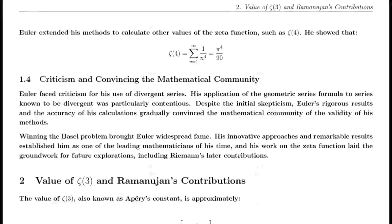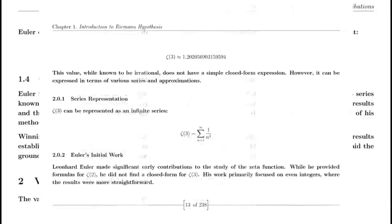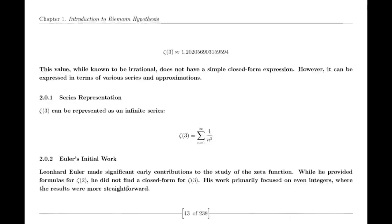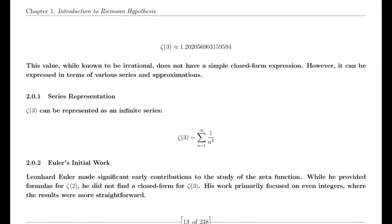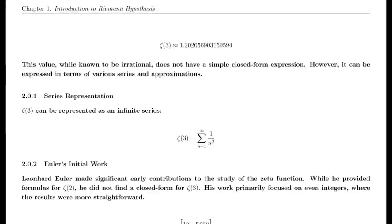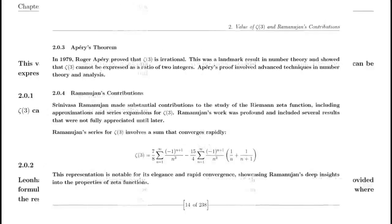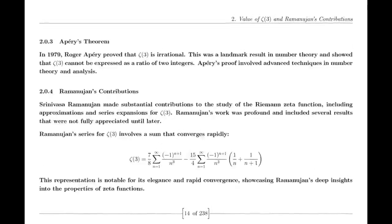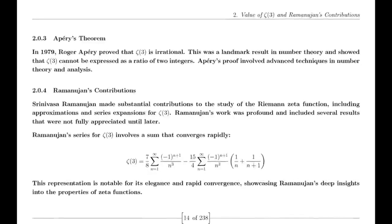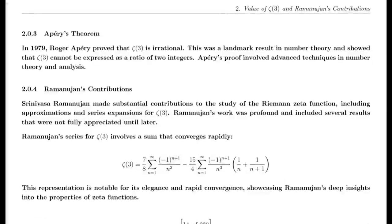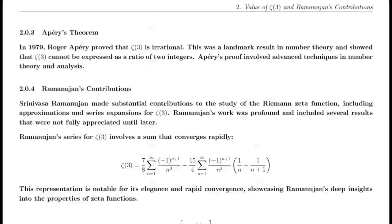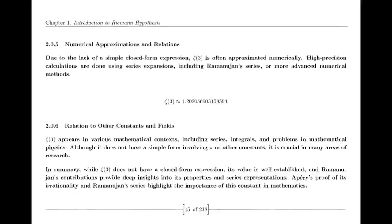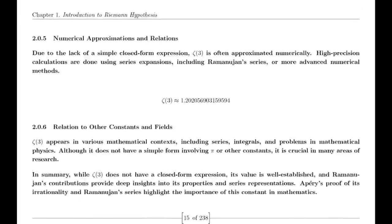In 1859, Riemann published his seminal paper on the distribution of prime numbers, which introduced the Zeta function and laid the groundwork for modern analytic number theory. This paper was a milestone in mathematical history and has had a lasting impact on the field, influencing subsequent research and discoveries.